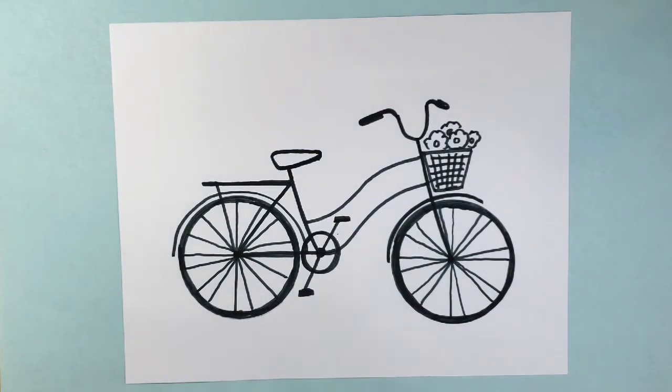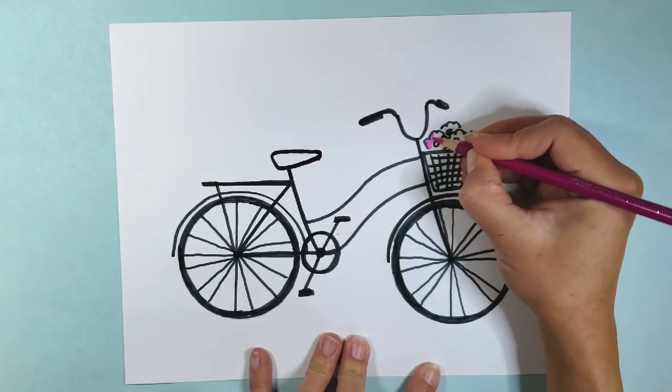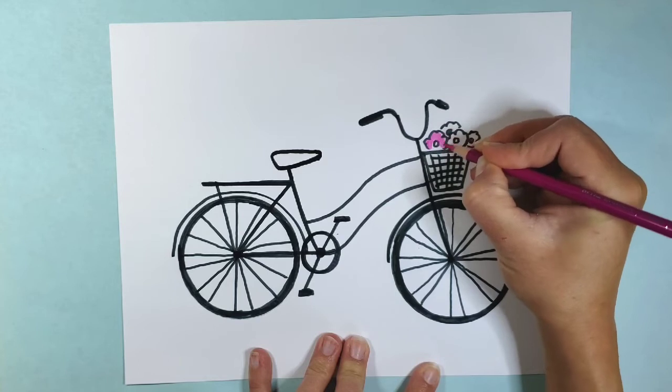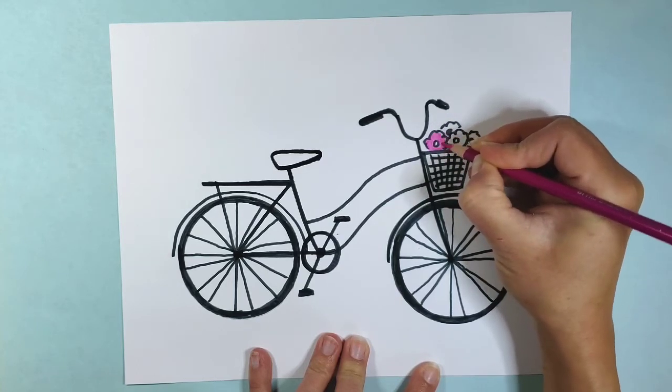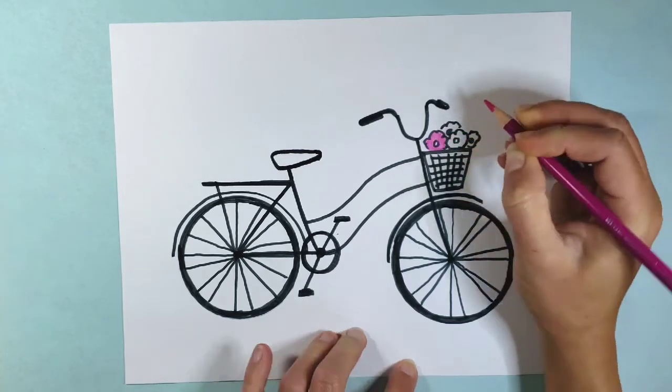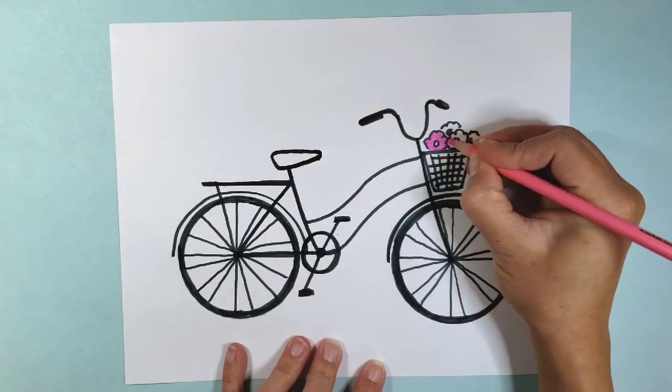And then you can leave it there and just leave it as a nice black and white drawing or if you want to you can add some color of course. There's not a whole lot to color on this bike unless I add a lot in the background. So I think I'm just going to color in a couple of these flowers here because they are so cute and cheerful.